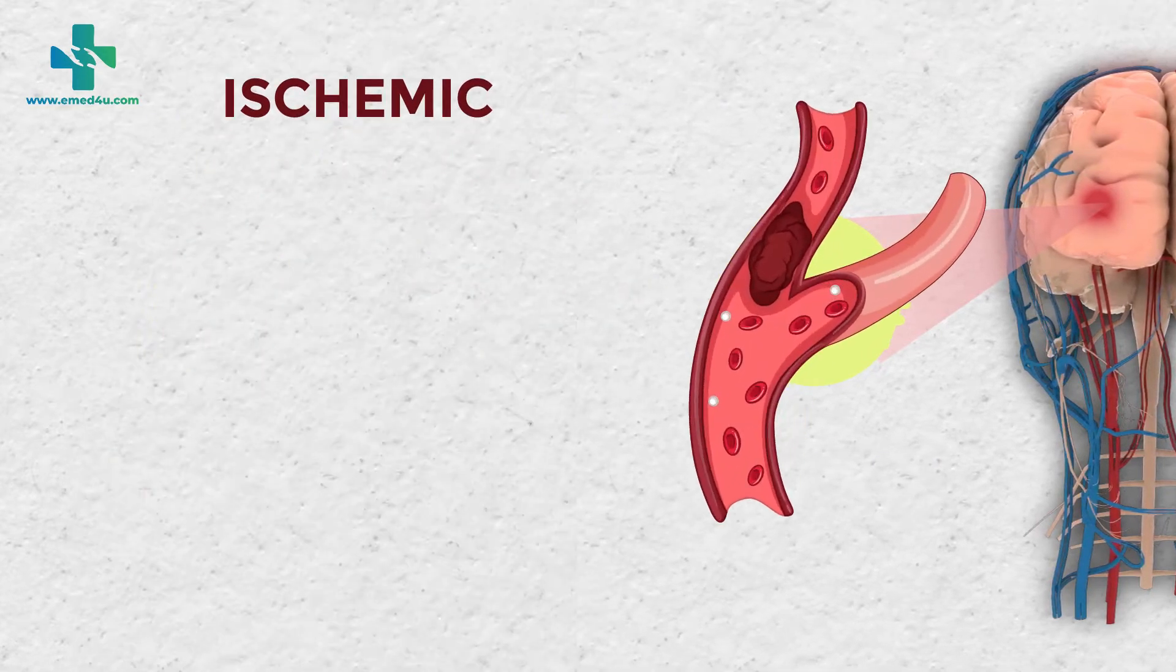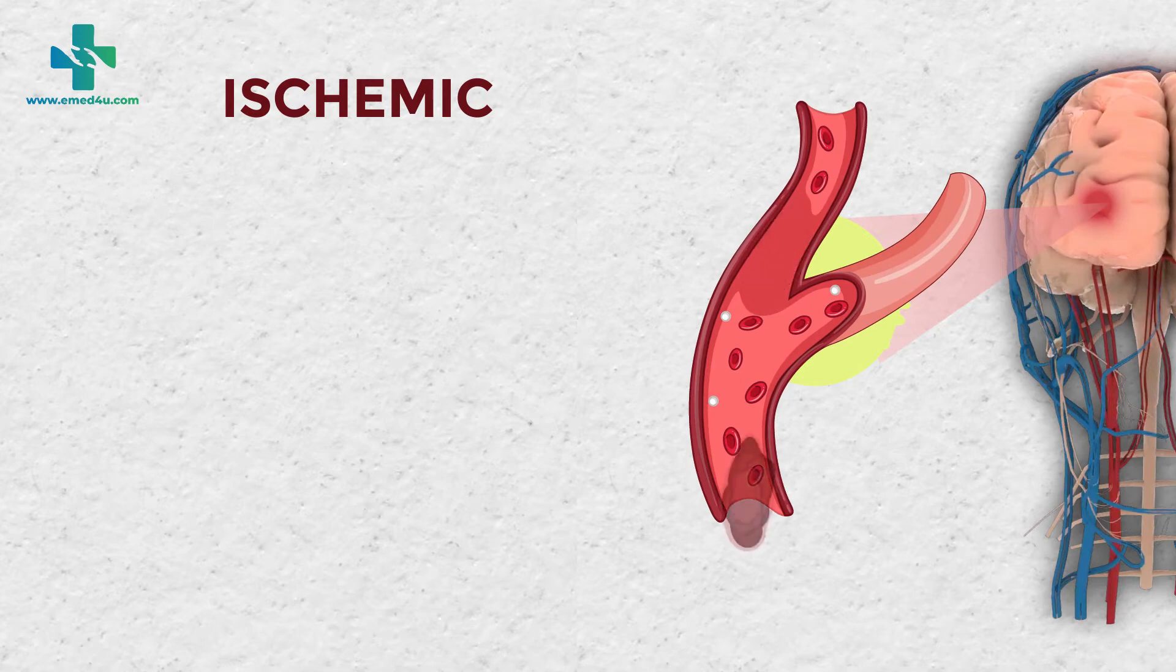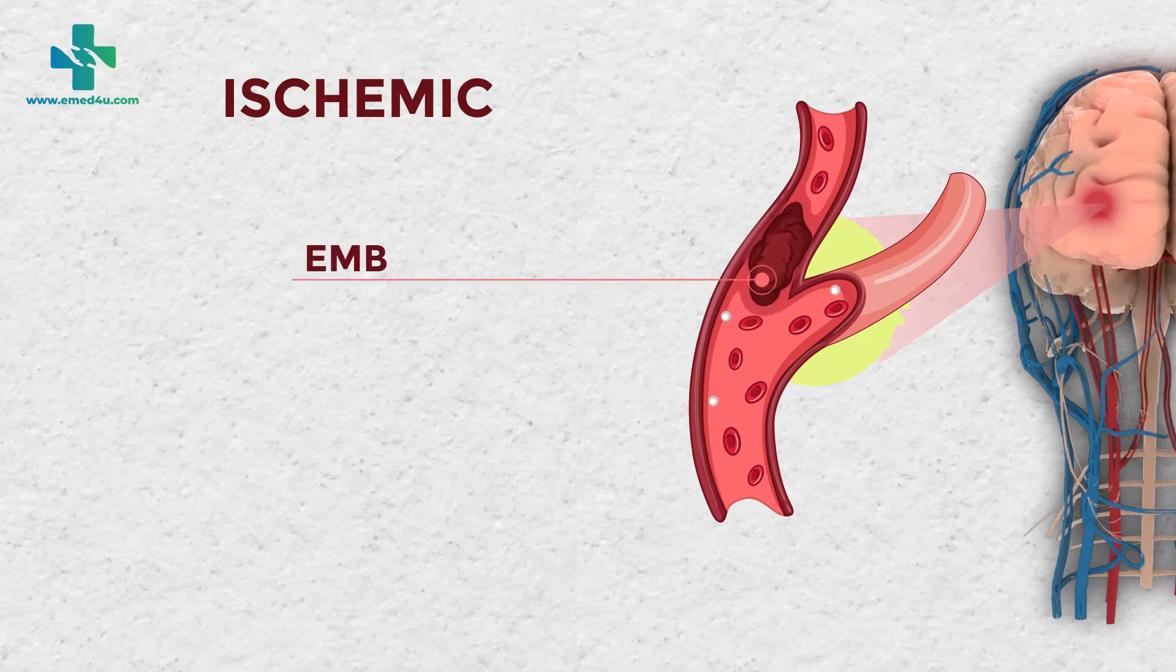In case of ischemic stroke, when a clot or thrombus originates at a distant site like a plaque or a blood clot from the heart and then reaches the brain to block a blood vessel, it is called an embolus.